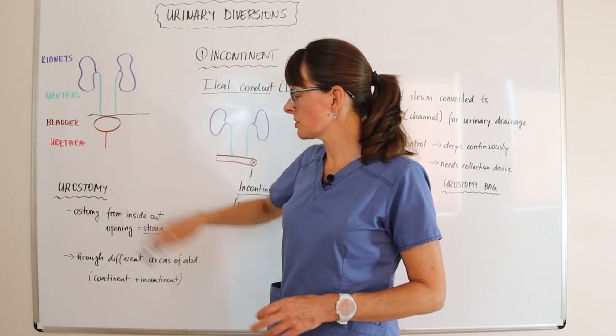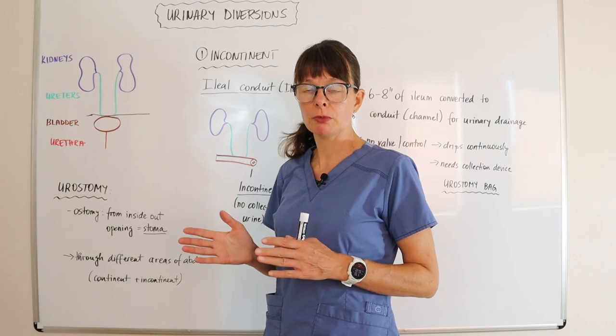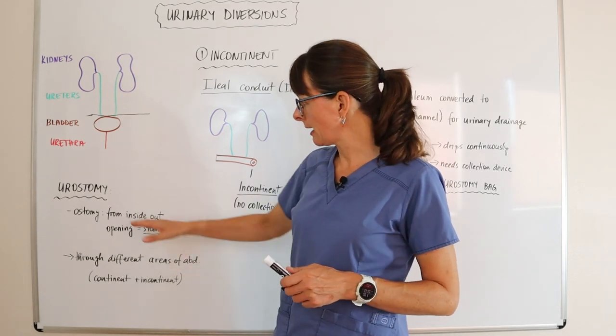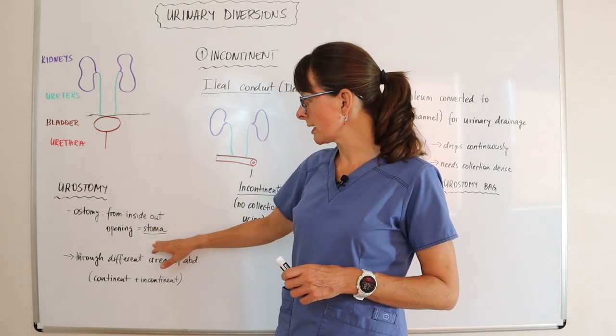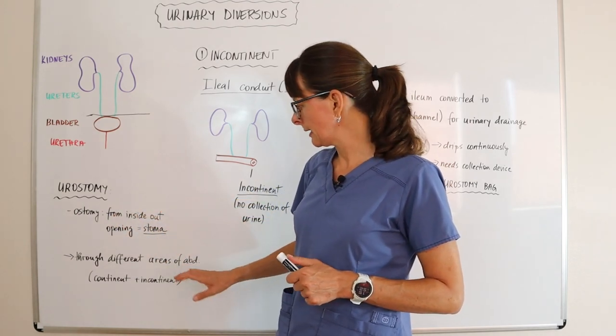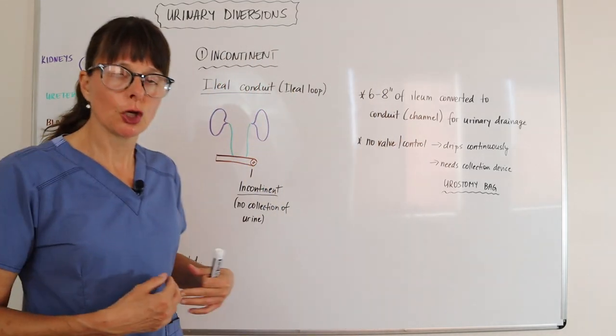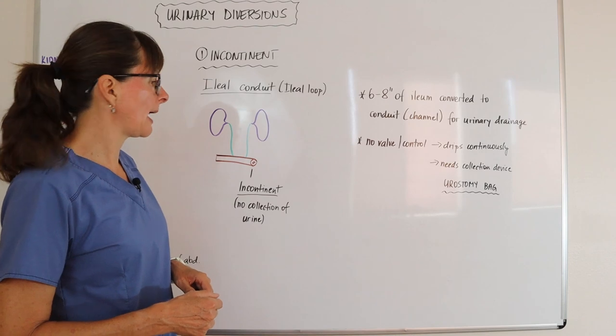A term that we use here is called urostomy, meaning uro pertaining to the urine, and then an ostomy is an opening or a stoma that's from the inside to the outside of the body. And it can come through to the outside of the body through different areas of the abdomen.